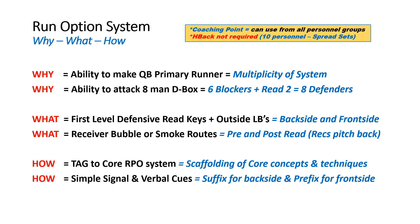So why are we doing this? This gives you the ability to make your quarterback the primary runner, and we're just multiplying our stretch system. It also allows you to attack eight-man defensive run boxes because we'll have six blockers, but now we're going to read two versus one in a run-run option concept versus eight defenders. What we're doing is we're going to read first-level defensive ends as our read keys and outside linebackers, both to the front side and the back side. The receivers in this option concept running bubble routes or smoke routes become basically the pitch back in our triple option concept.